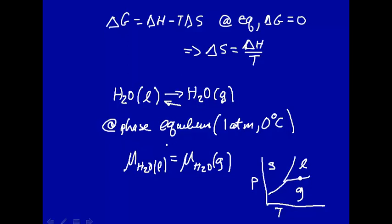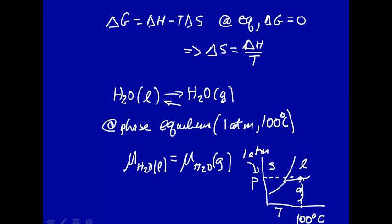Actually, rather than re-record this lecture, let me just say that for the liquid-gas boundary, there should be 100 degrees C — not zero. Right up here at one atmosphere and at 100 degrees C, at that point we're right there along that phase boundary.